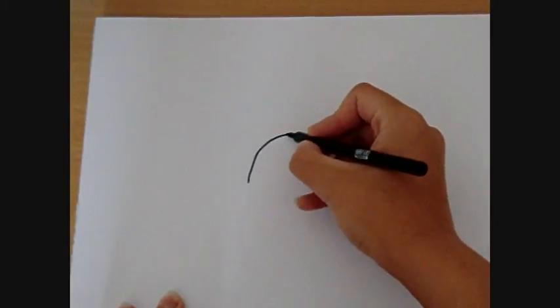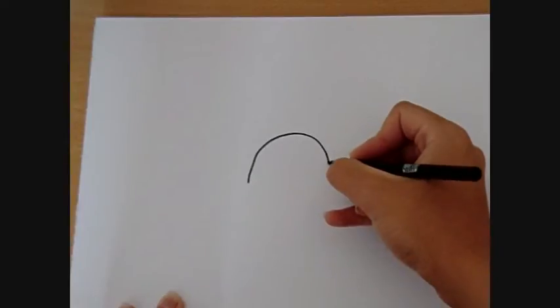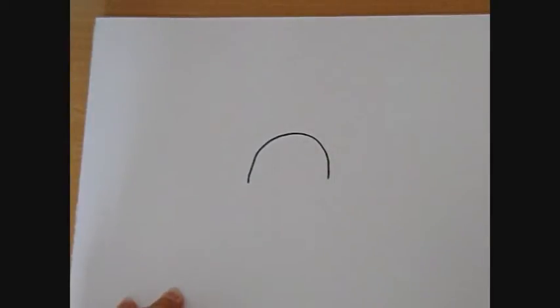First of all what you're going to want to do is just draw a basic semi circle. Like that, for his back.